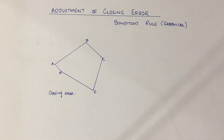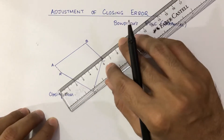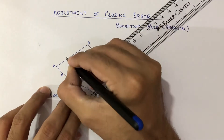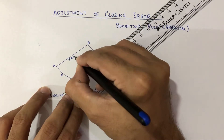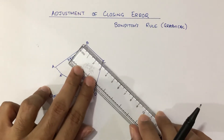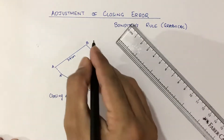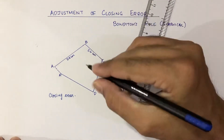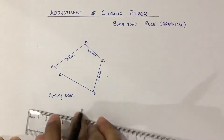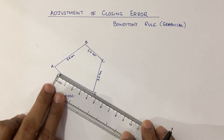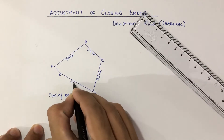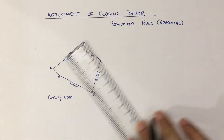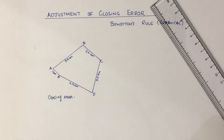First, we will find out the length of all the sides of the traverse. The length AB is given as 3.9 centimeters, BC is 2.6 centimeters, CD is 3.2 centimeters, and DA' is 4.4 centimeters. Also, the closing error is given as 1 centimeter.